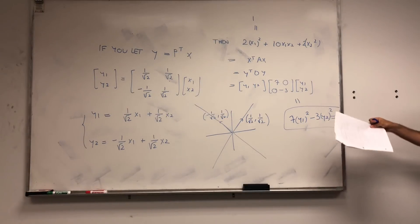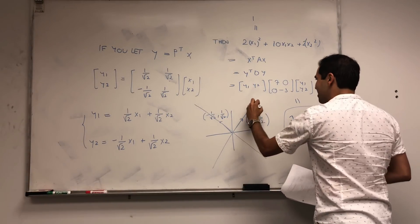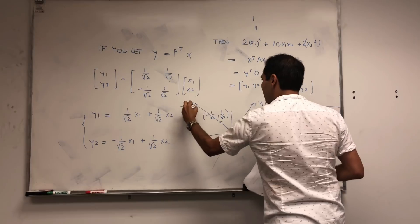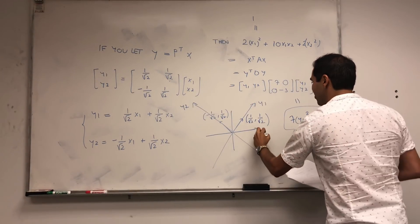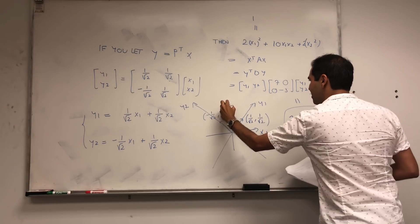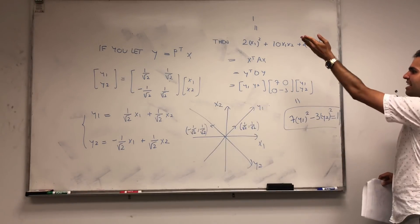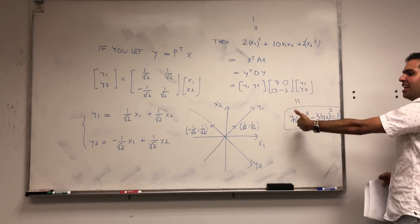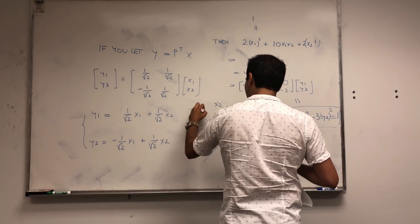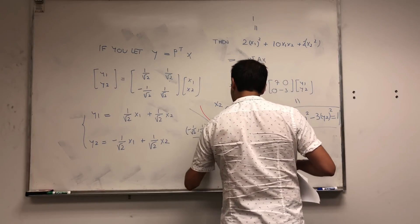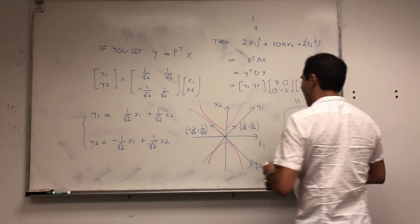So in other words, if you change your thing to Y1 and Y2, so if your new axes become Y1 and Y2, or your original one was X1 and X2, then in fact, our quadratic form just becomes a hyperbola, which looks like this. I'll tell you in a second how I found the axes.